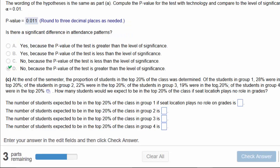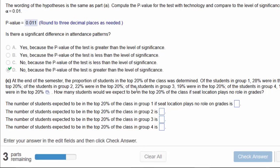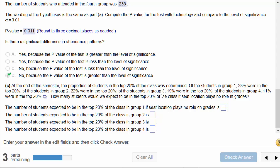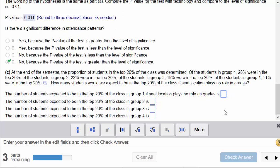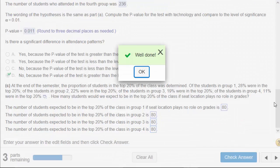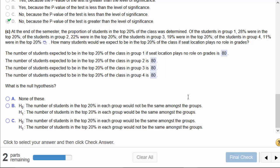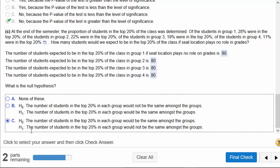Let's see what else we have in this problem. At the end of the semester, the proportion of students in the top 20% of the class was determined. In group 1, 28% were in there. In group 2, 22%. Group 3 was 19 and group 4 was 11. And how many students would we expect in the top 20% if seat location plays no role in grades? In other words, we'd expect 20% from each group to be in the top 20. So 400 times 20%, that is 80 for each group that we would expect to be in the top 20%. Now the next part, we have to figure out the null hypothesis. The number of students in the top 20% would be the same amongst the groups, and then it would not be the same. So that's option C.